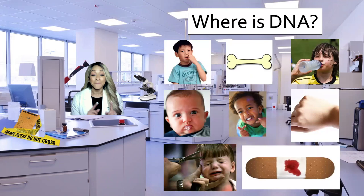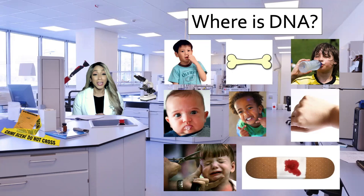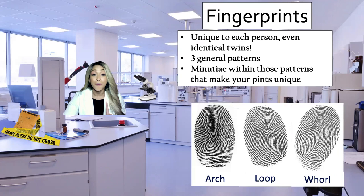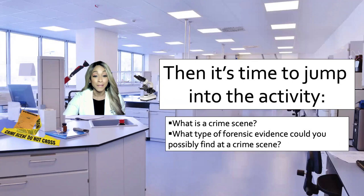What is he doing? He's picking his nose. Is it disgusting? Absolutely. And the kids all say, 'Ew, gross.' But that is a great opportunity for me to say, 'Did you know you could get DNA from your boogers?' And then we go through each of these pictures and talk about different places where we can find DNA. We also talk about fingerprints and how unique they are — fingerprints can even tell the difference between identical twins. Then after that discussion and introduction into DNA and fingerprints, it's time to jump right into the activity.